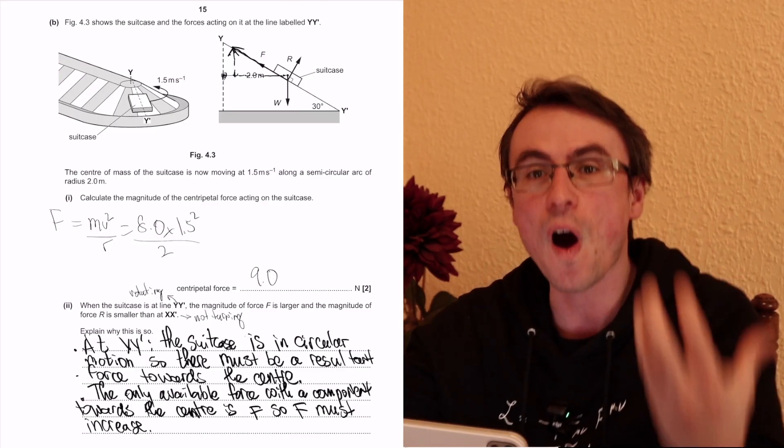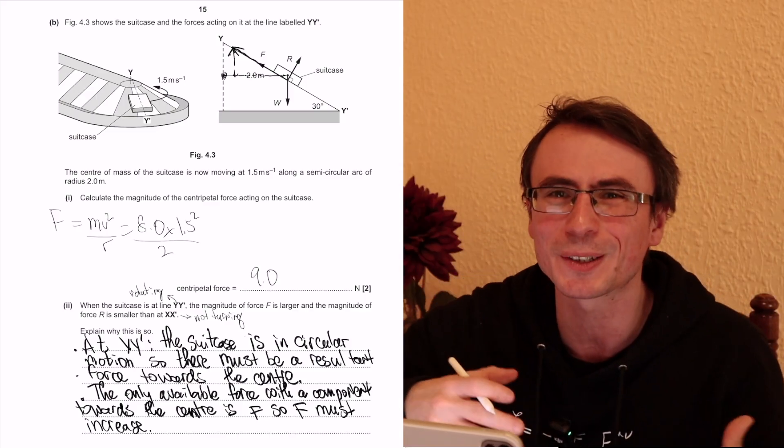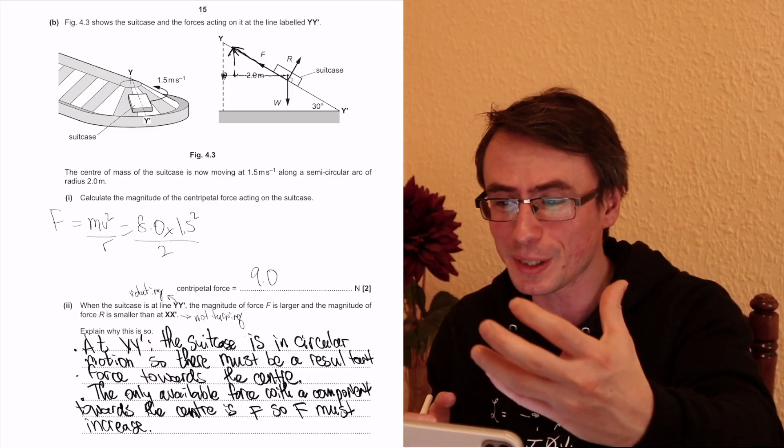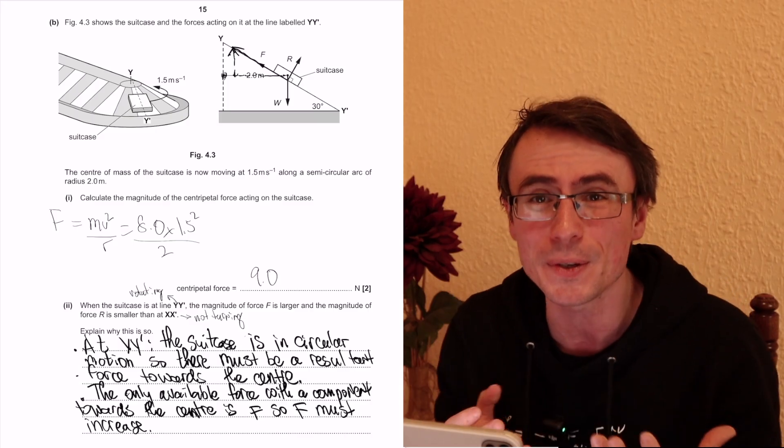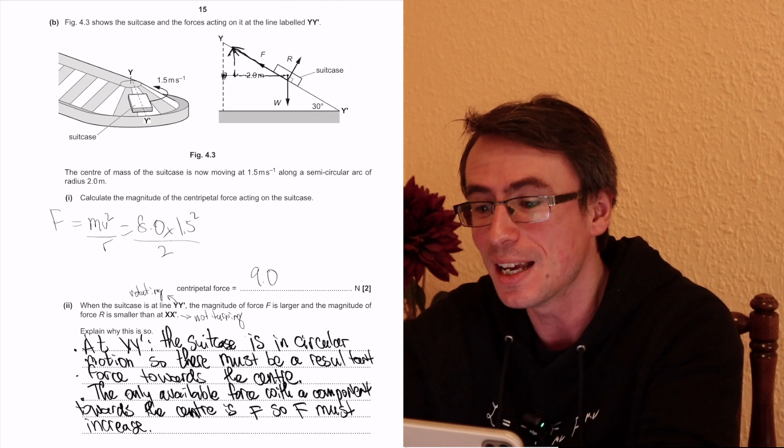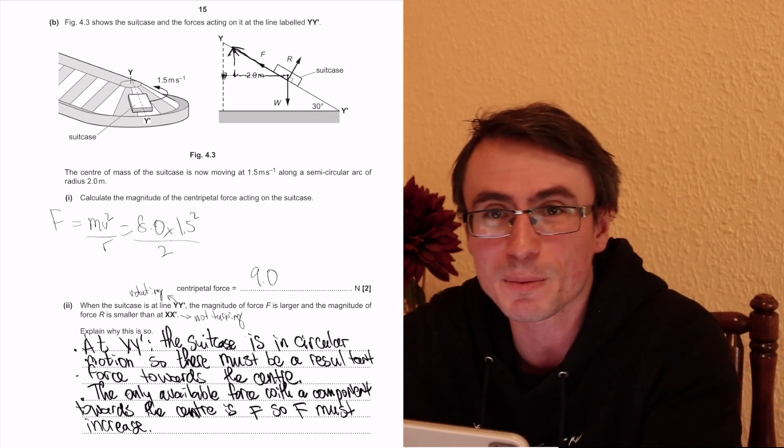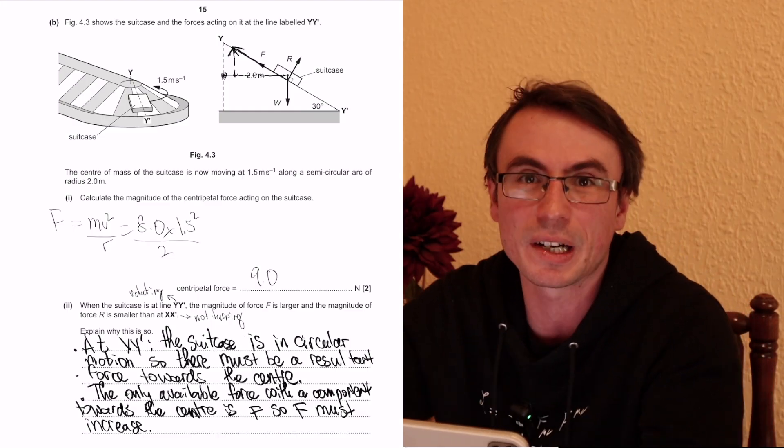And if the vertical component of F increases, there's not going to be a need for such a big R component, for such a large normal reaction. We're not going to be pushing the ground as much because the resultant between F and w is going to be smaller, so we're going to be pushing the surface less, meaning that R will actually decrease. In fact, we can be moving at a speed to completely eliminate R if we wanted to. Let's try and word this as well.